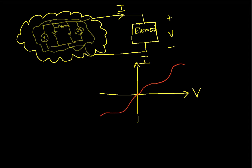In this curve, V is not considered to be an independent variable, nor is I. The idea is that our element will constrain the relationship between the voltage across it and the current through it. This is something we can actually use to solve circuits. What I'd like to do is show you a few VI curves for some things that hopefully you're familiar with.